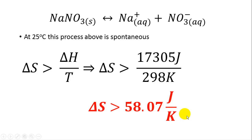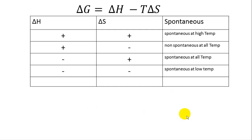The second post-lab question has to do with the conditions under which a reaction is going to occur — we call that a spontaneous reaction. That is where delta H, delta S, and temperature are all in harmony to make delta G negative. Delta G being negative is what we want for a reaction to be spontaneous and move toward the products.